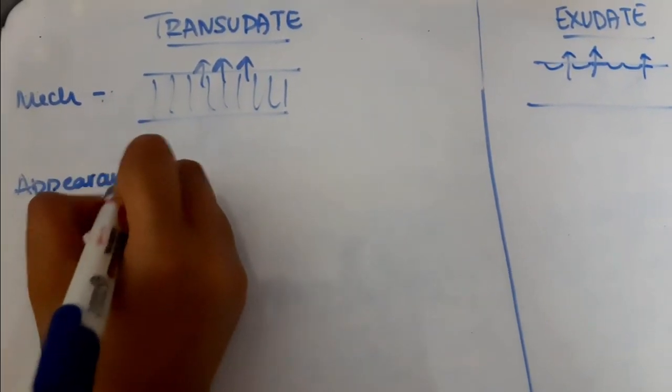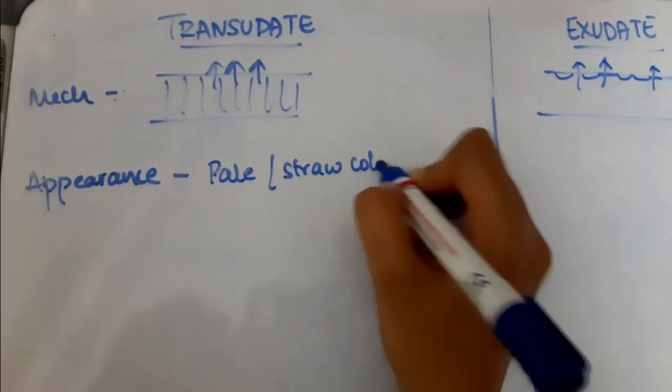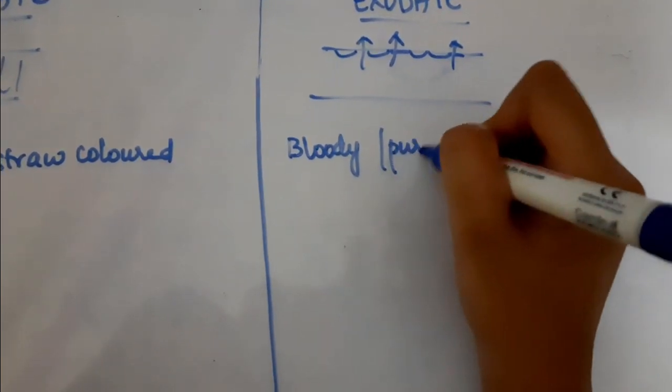Transudative fluid has a pale, straw-colored appearance whereas an exudative fluid will have a purulent or hemorrhagic appearance.